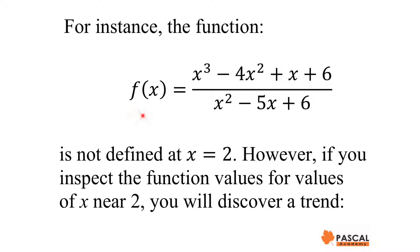For example, f(x) = (x³ - 4x² + x + 6) / (x² - 5x + 6) is undefined at x = 2. However, if we inspect the function values for x's near 2, we'll see the following trend.